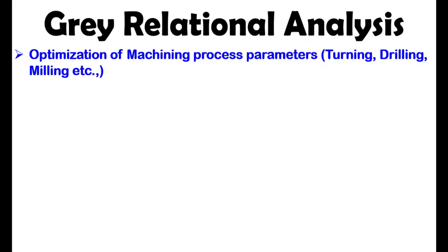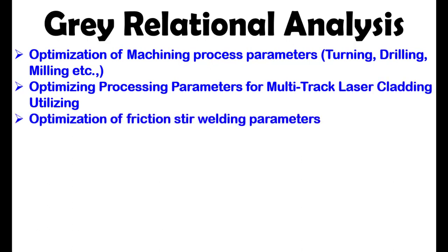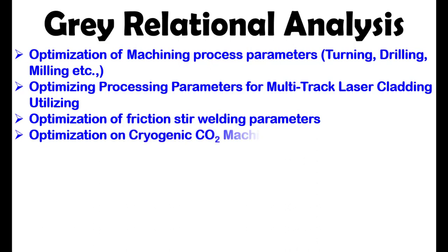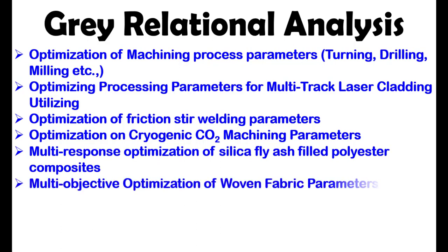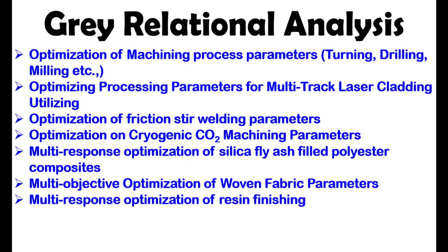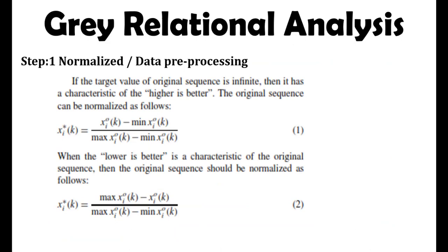Multiple research papers use grey relation analysis for many kinds of machining process optimization, including multi-track laser clamping, fixture steel welding process parameters optimization, cryogenic machining process parameters optimization, silica flashed polyester composites optimization, multi-objective optimization of woven fabric parameters, multi-response optimization of resin finishing, and pyrolysis process parameters maximization.